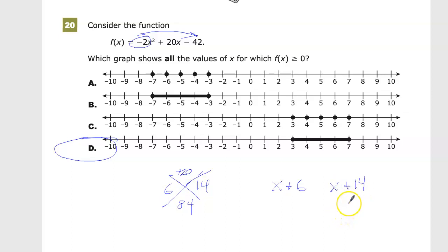Those are my two values. I end up with (x + 6) and (x + 14). Dividing by -2 in each term, this one works out pretty easily, giving me a factor of (x - 3).